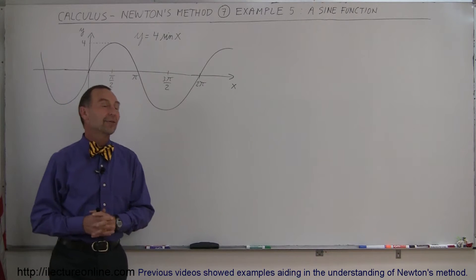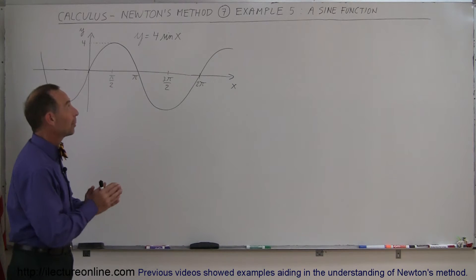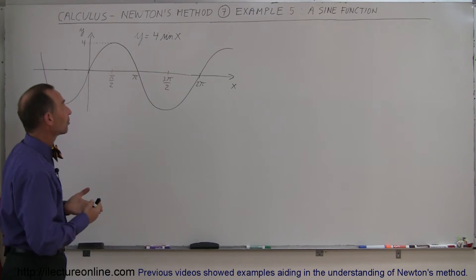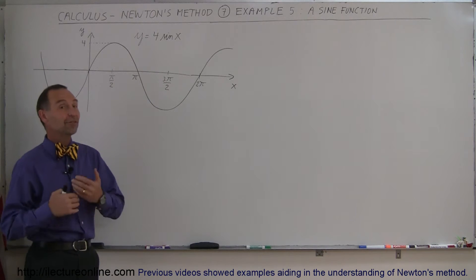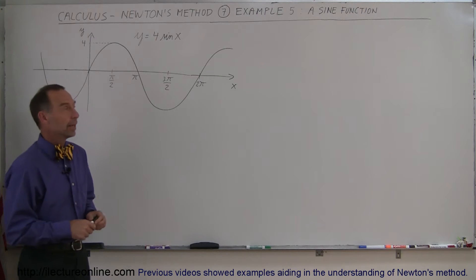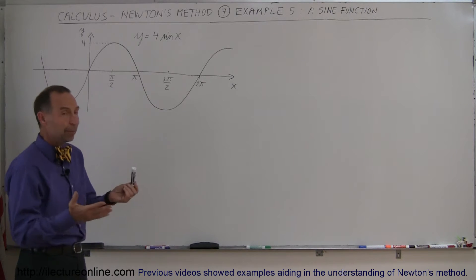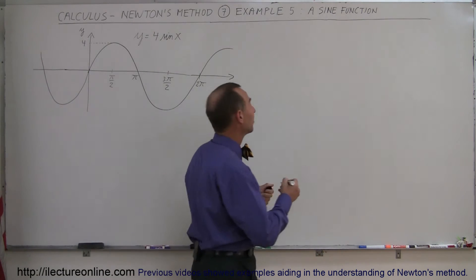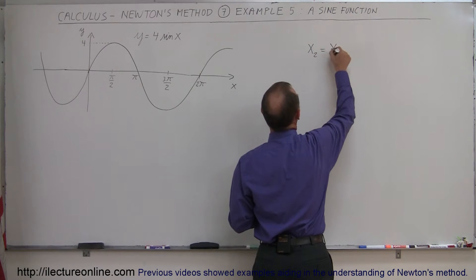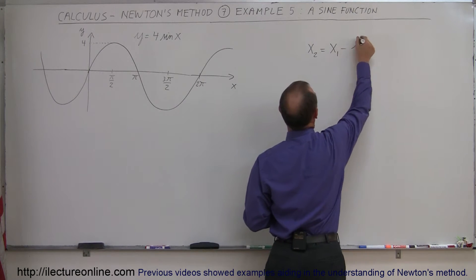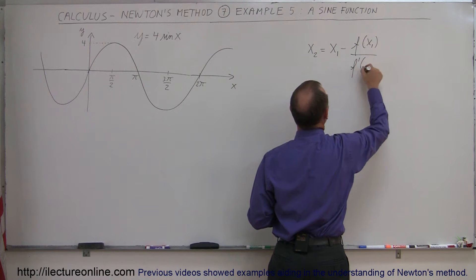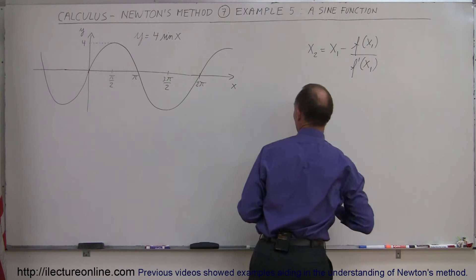Welcome to Electronline. Here's one more example on how to use Newton's method. Let's take a more unconventional type of function — let's use a sine function to see if it works just as well. Again, we pick a sample point, and with that sample point we can say that x₂ is equal to the sample point minus the function evaluated at the sample point divided by the derivative of the function evaluated at the sample point.